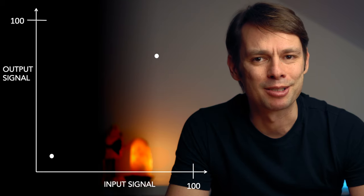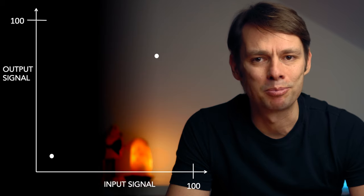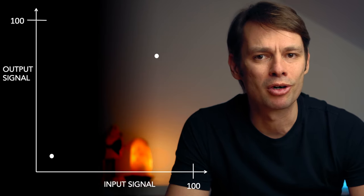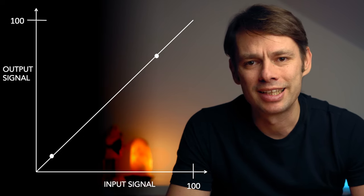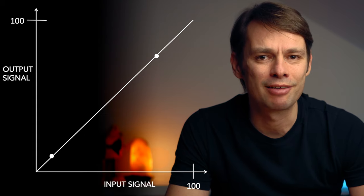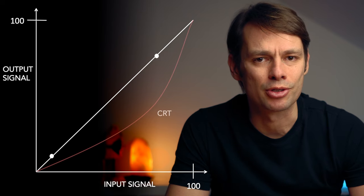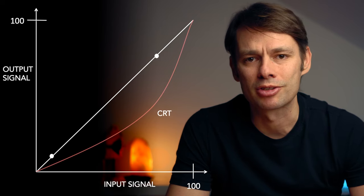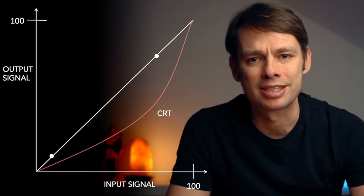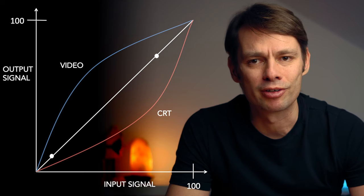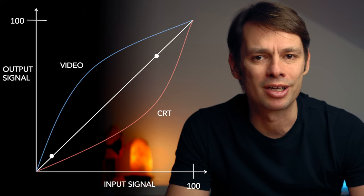So far everything seems clear and simple. In order for the image to be displayed properly, the ratio between the level of the input signal and the level of the output signal should be more or less proportional — it should represent a straight line. Unfortunately, CRT monitors do not have such a linear ratio. Rather, these monitors produce a curve. LCD and OLED monitors have been adapted to the curve of CRT monitors. To counteract this, the camera generates an opposite curve when recording. A video gamma curve therefore looks something like this, and the result on the monitor is then again more or less linear.